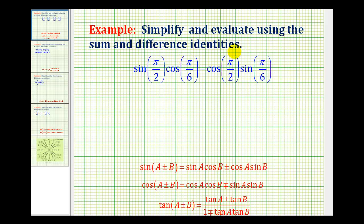In this example, we want to simplify and evaluate using the sum and difference trig identities listed below in red. The first step is to recognize which identity we'll be applying. Notice that we have the sine of π/2 times the cosine of π/6.